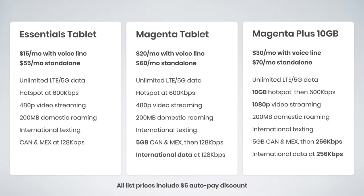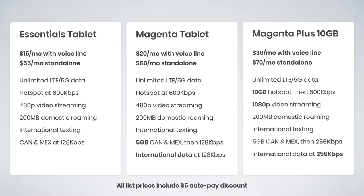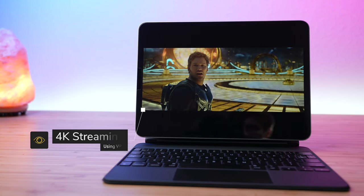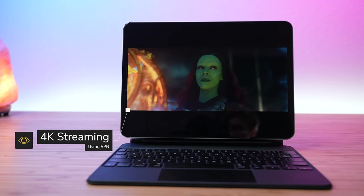All of these prices are listed with the $5 auto-pay discount already included — if you don't have auto-pay, add $5 to the cost of these plans. Also, even though video streaming is limited to 480p on Essentials for Tablets or Magenta for Tablets, you can actually enable HD video streaming by using a VPN.